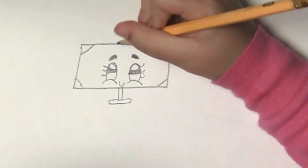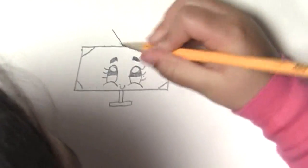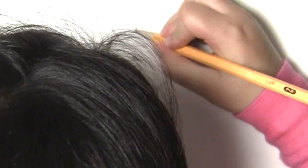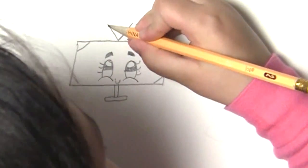And then what you're going to do is you're going to put a little antenna on the TV. Make sure it's connecting to the thing.